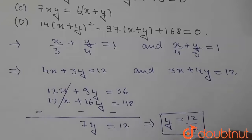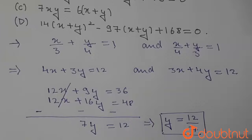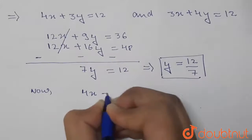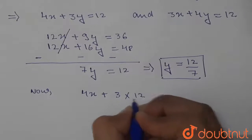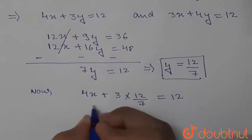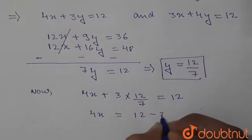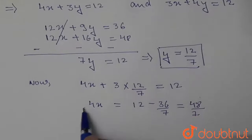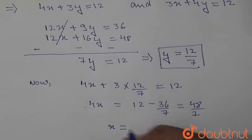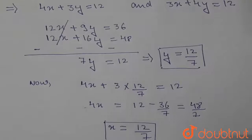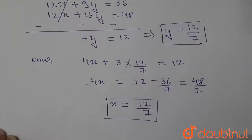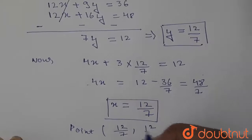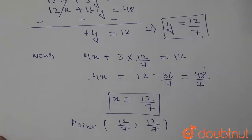Now substituting y = 12/7 into the equation 4x + 3y = 12, we get 4x + 3(12/7) = 12, so 4x = 12 − 36/7 = 48/7, and therefore x = 12/7. So the intersection point is (12/7, 12/7).